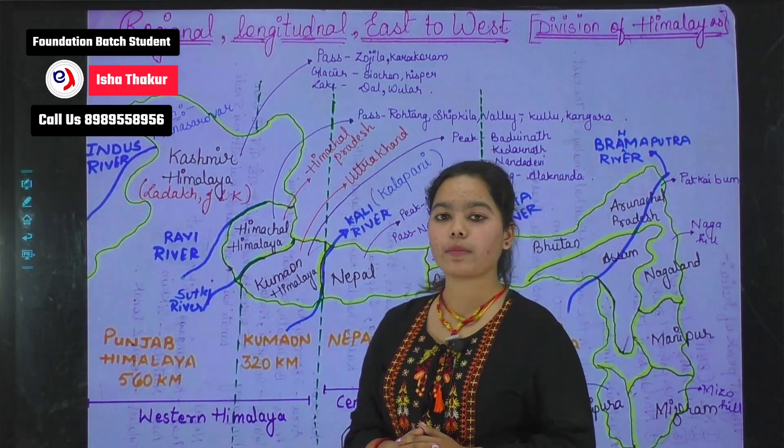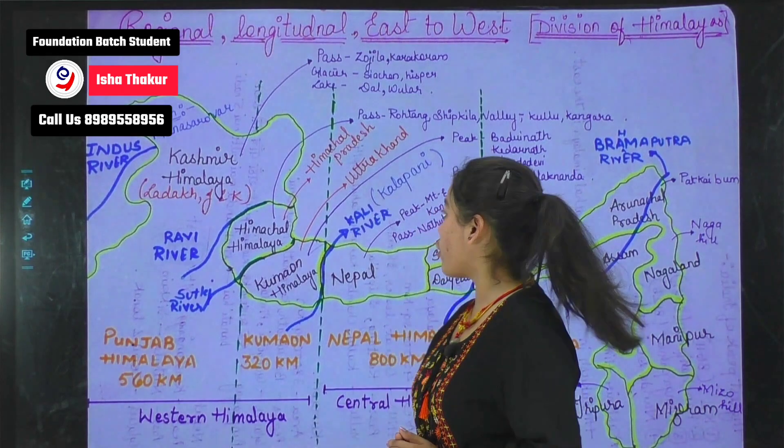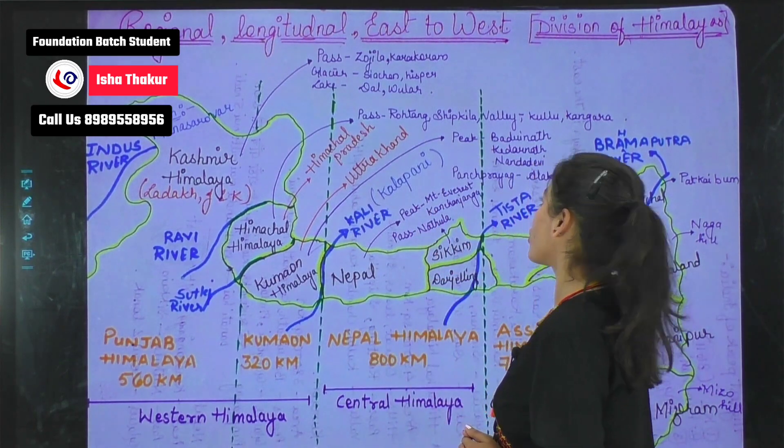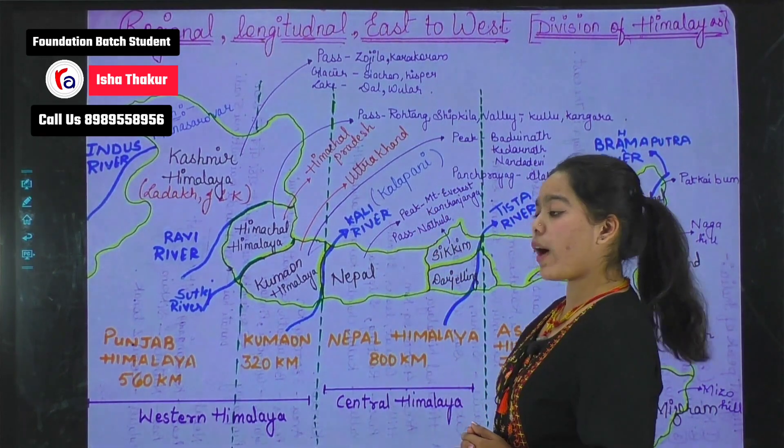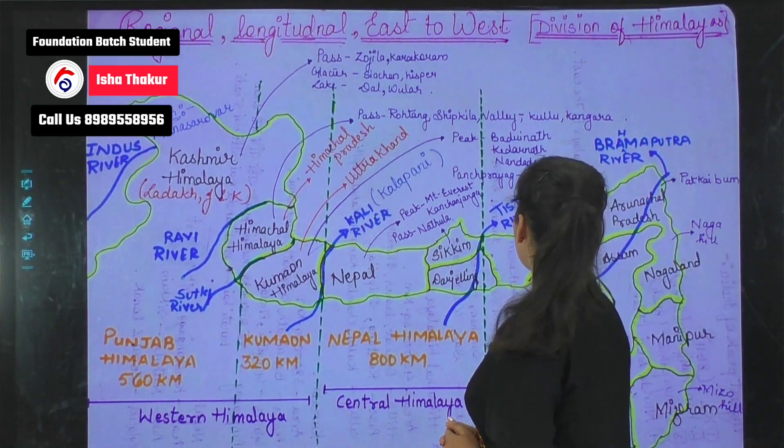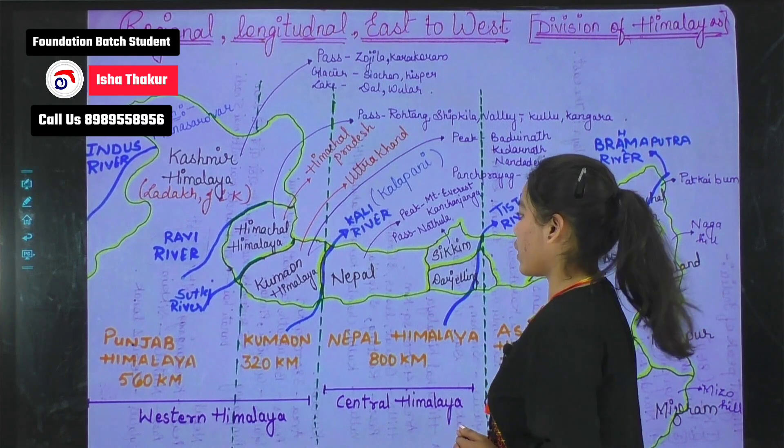Himachal Himalaya consists of some passes like Rohtang Pass and Shipkila, and valleys like Kullu and Kangra.